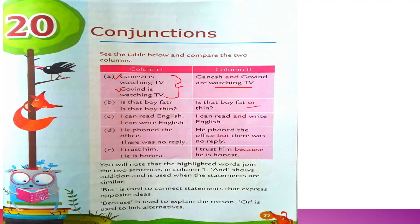Next: 'I can read English. I can write English.' Again, both sentences are giving similar information. So we join them with 'and': 'I can read and write English.' Both sentences are statements giving the same kind of information, so 'and' is the right conjunction here.